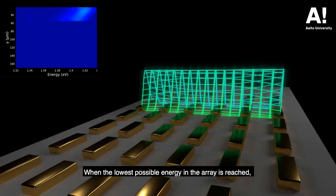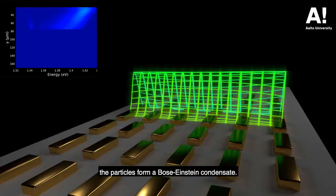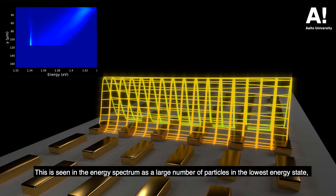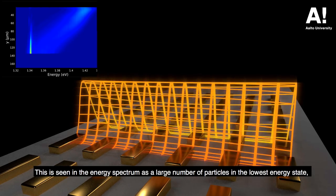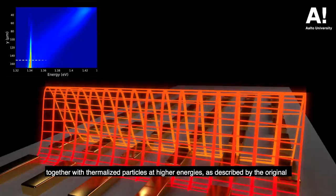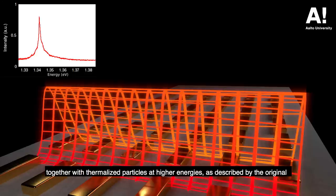This is seen in the energy spectrum as a large number of particles in the lowest energy state, together with thermalized particles at higher energies, as described by the original theory by Bose and Einstein.